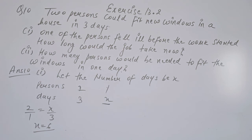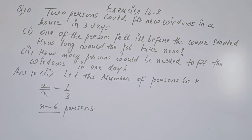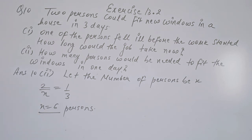Now for the second part: how many persons would be needed to fit the window in one day? Let the number of persons be x. Number of persons is inversely proportional to number of days. So 2 divided by x equals 1 divided by 3, giving x = 6. So 6 persons would be required to complete the job in 1 day.